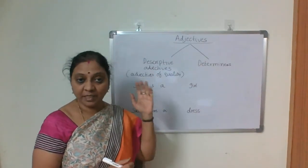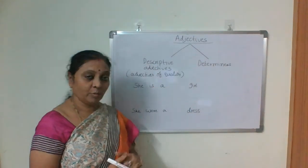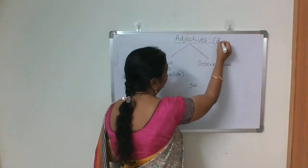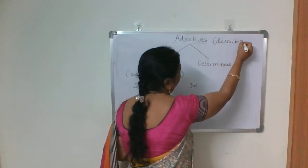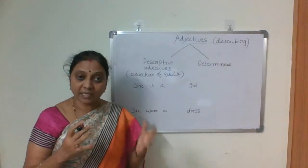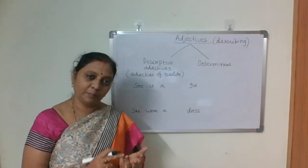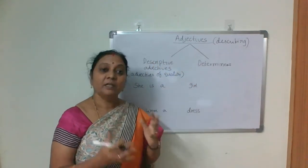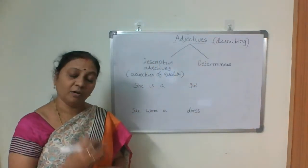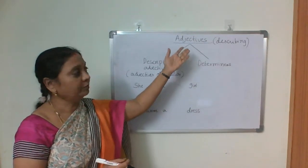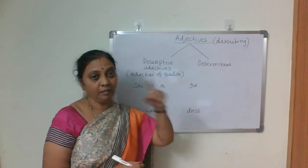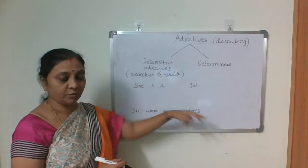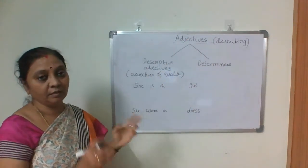What is an adjective? In the beginning parts of speech video, I said adjective is a describing word, isn't it? It mostly describes a noun or a pronoun — the characteristics or the quality of a noun or pronoun. That's why we call them adjectives. So adjective always has connection with the noun or pronoun.